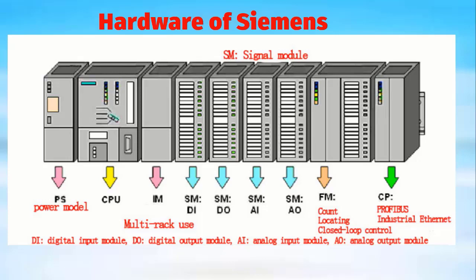The last two modules are FM and CP. FM is the closed-loop control module. CP is the PROFIBUS industrial internet communication system module. If you want to connect this PLC to communicate with other PROFIBUS devices, this communication module will be used.